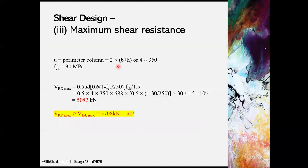Maximum shear resistance VRD max can be determined based on the shear at the column face. The recommended equation requires the perimeter of column, effective depth, and the FCK. The VRD max is to compare and shall be greater than VED max.